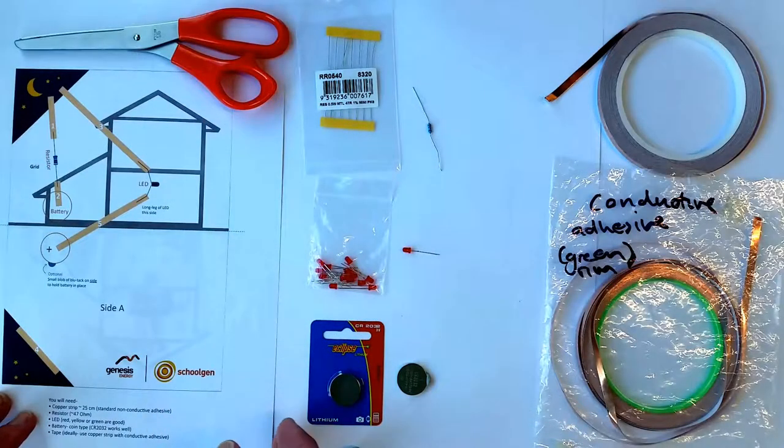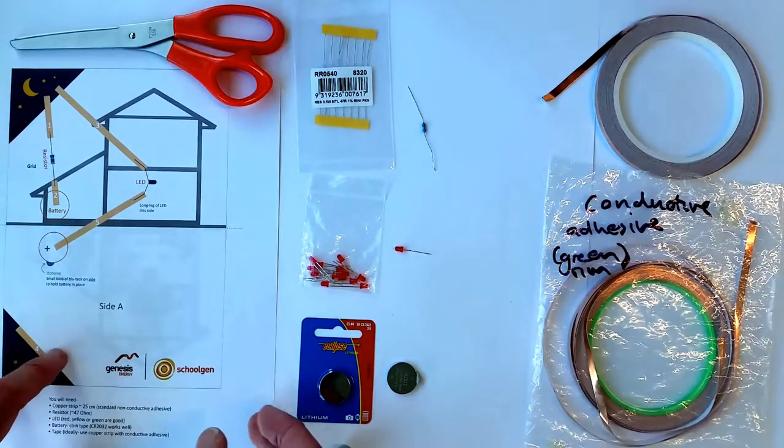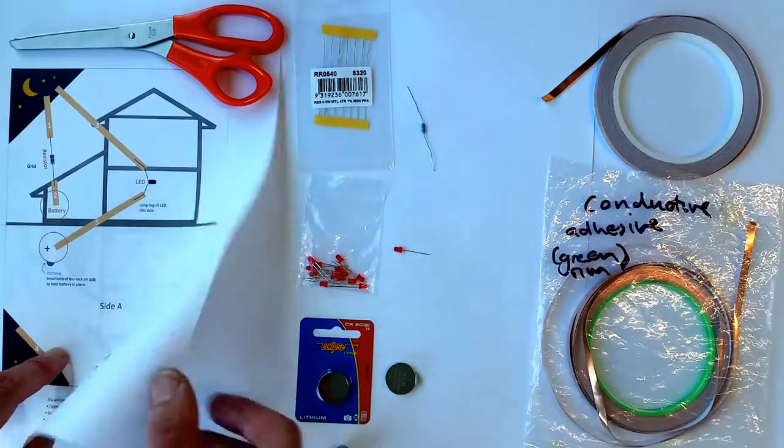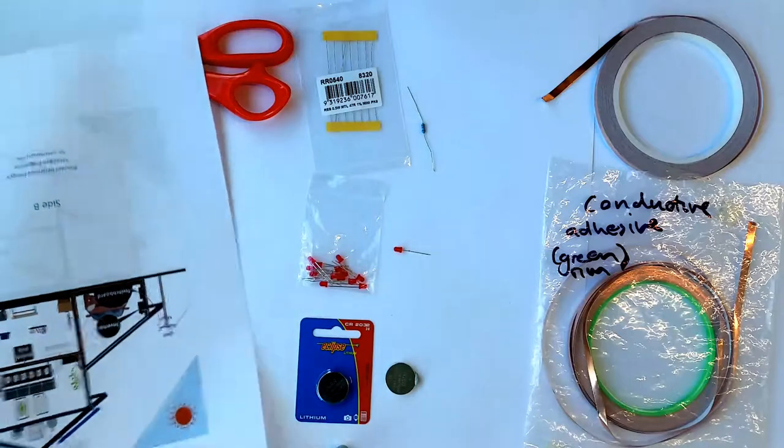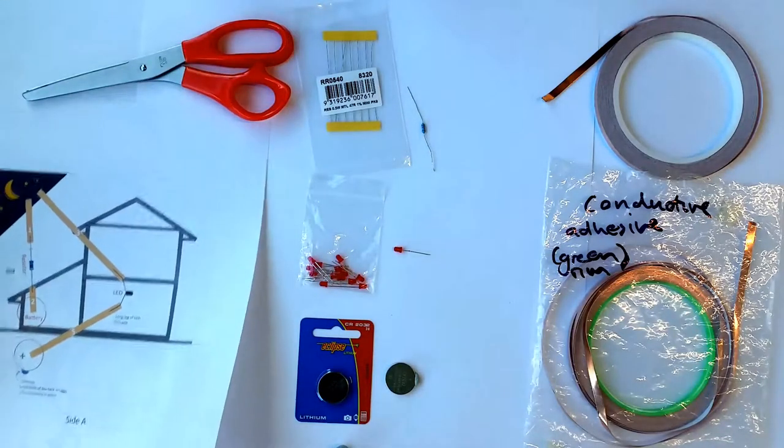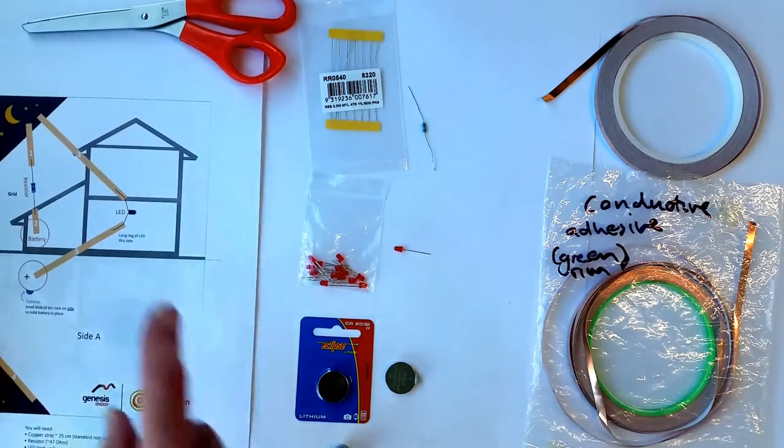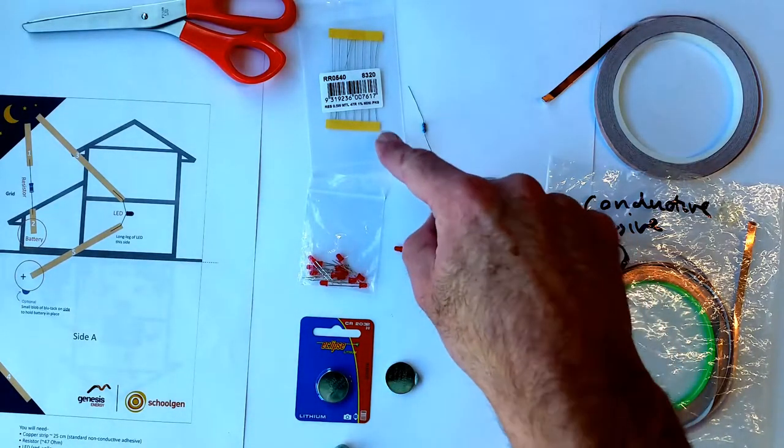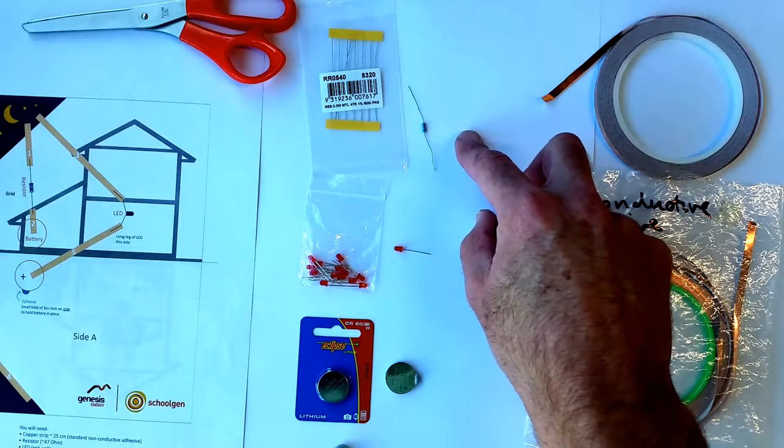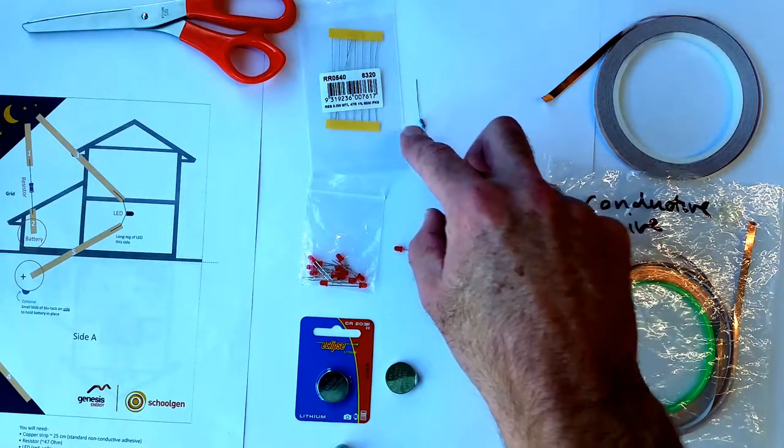To make a paper circuit, you're going to need to print out double-sided the template. We start with this side, side A. The components you're going to need: a resistor right here. We're going to get a 47-ohm resistor, quite a low resistance value.